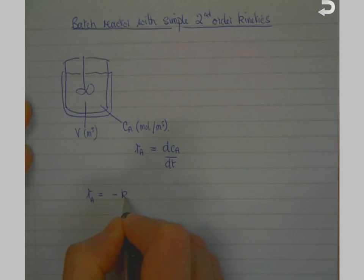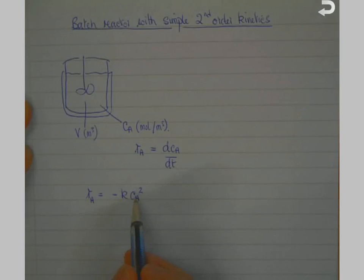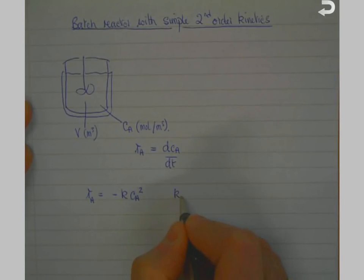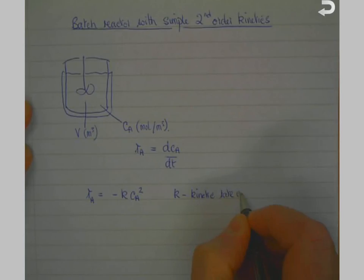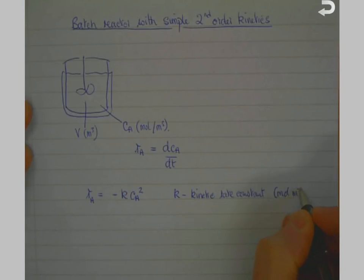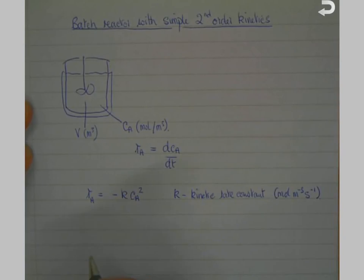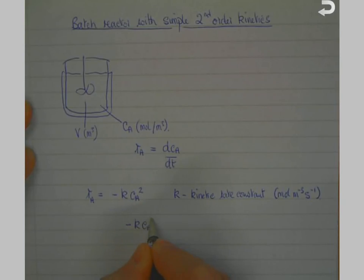In this case we have second-order kinetics, so RA is equal to minus K times CA squared. It's minus because A is being consumed, and this is the simplest second-order case where the rate depends on the concentration of starting material A squared. We have a second-order kinetic rate constant, and because it's second-order we know it has units of moles per cubic meter per second.